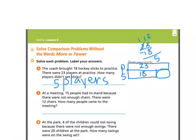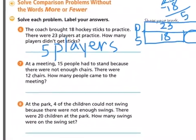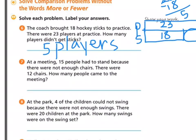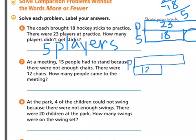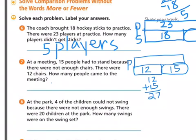Number 7 — we'll do one more and then I'm going to have you finish the work. At a meeting, 15 people had to stand because there were not enough chairs. There were 12 chairs. How many people came to the meeting? So we don't have any misleading words like 'fewer' or 'more,' but it does sound confusing. We don't know how many people are there, so I'm going to put P for people and leave it blank. Then I'm going to put 12 for chairs, and over here 15 people were standing. So the 12 people were sitting, the 15 people were standing. 12 plus 15 is going to help us know how many people came to the meeting.